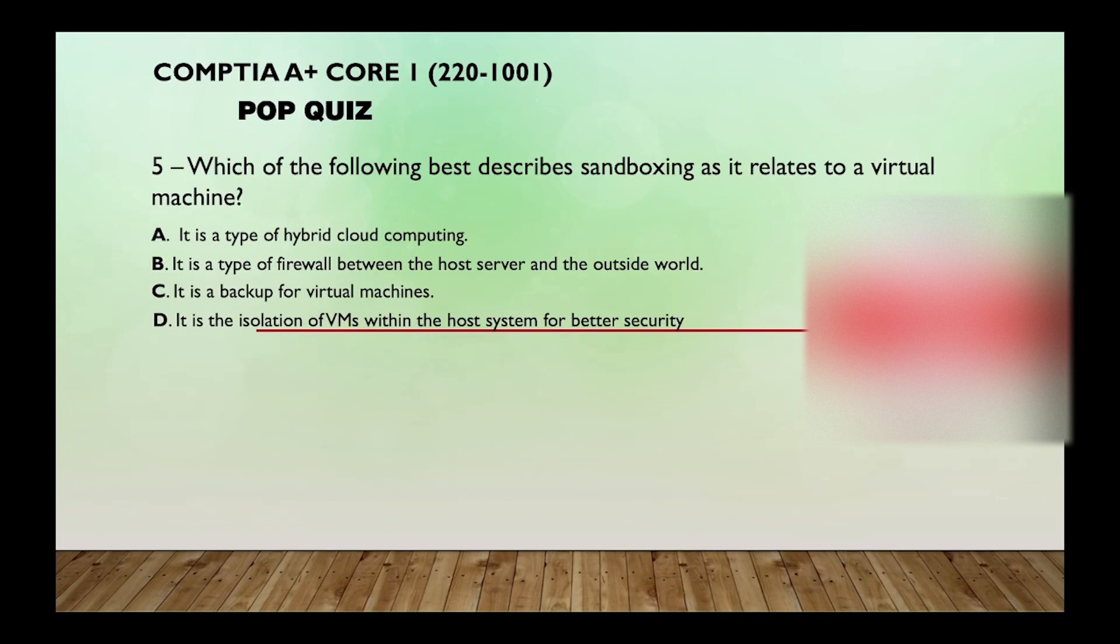Number five, which of the following best describes sandboxing as it relates to a virtual machine? A, it's a type of hybrid cloud computing. B, it's a type of firewall between the host server and the outside world. C, it is a backup for virtual machines. Or D, it is an isolation of virtual machines within the host system for better security.